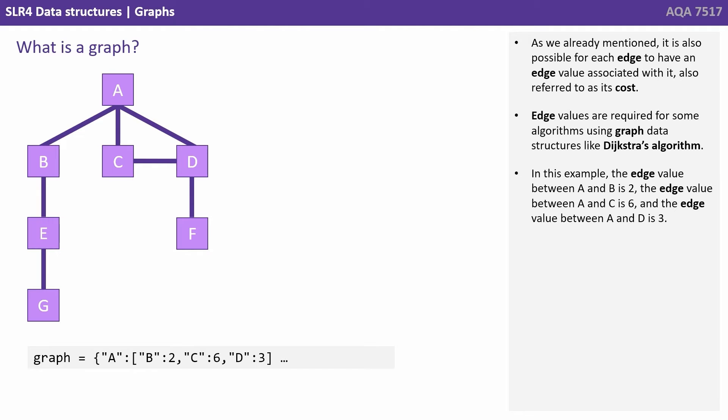In this example, the edge value between the nodes A and B is 2, the edge value between A and C is 6, and the edge value between A and D is 3.